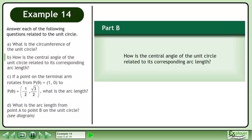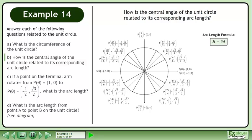Now we'll move on to part B. How is the central angle of the unit circle related to its corresponding arc length? We can use the arc length formula, a equals rθ, to answer this question.